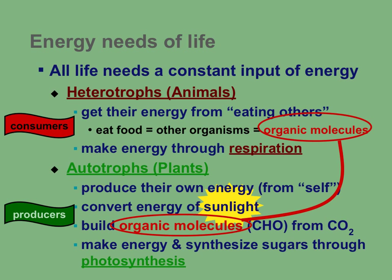We need to review a couple of terms. Remember from chapter 2, talking about biochemistry and the physical natures of life — all organisms and living things need a constant input of energy. There are two main ways of doing that. Things are either heterotrophs, which is mostly the animal kingdom including you and I, or there are autotrophs, things that are able to make their own molecules. Heterotroph — hetero means other, and troph means to eat or to feed. So heterotrophs get their energy, their food, from other organisms — they get their organic molecules from other organisms. So they're consumers.